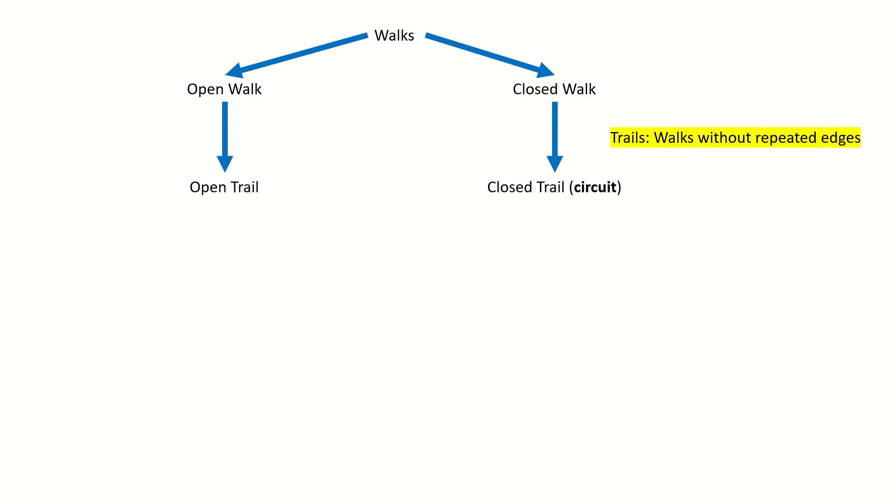And then we can define paths, which are trails where we do not repeat vertices, remembering that we also have open and closed paths, which are also known as cycles.